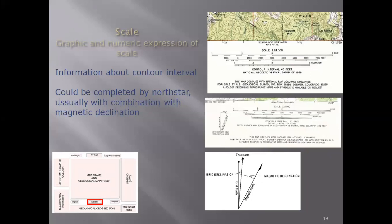Sometimes maps also give magnetic declination information. Another important thing is the contour interval — it is mentioned as 40 feet, meaning every contour line is 40 feet higher than the previous one. Sometimes people use 100 feet, 50 feet, or 20 feet — it depends on your purpose, particularly for topographic maps.